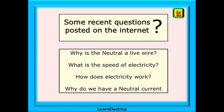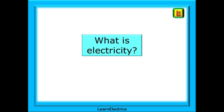They included questions like: Why is the neutral a live wire? I thought the brown wire was live. What is the speed of electricity? Can it really be the speed of light? How does electricity work? And why do we have a neutral current? There shouldn't be any current in the neutral, surely? Let's begin by answering the question: what is electricity?